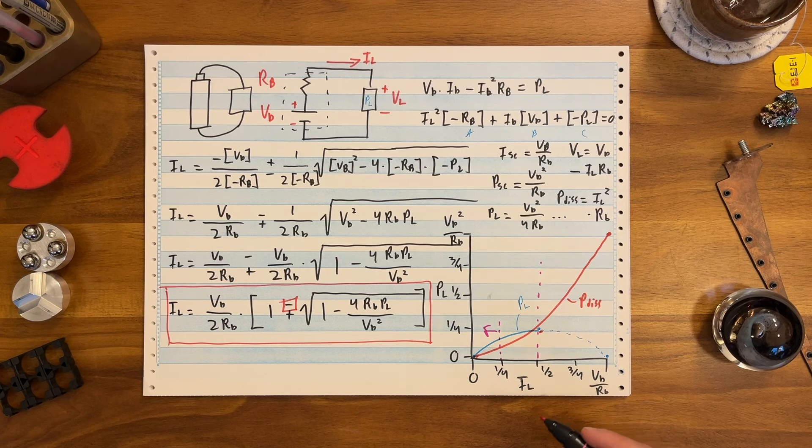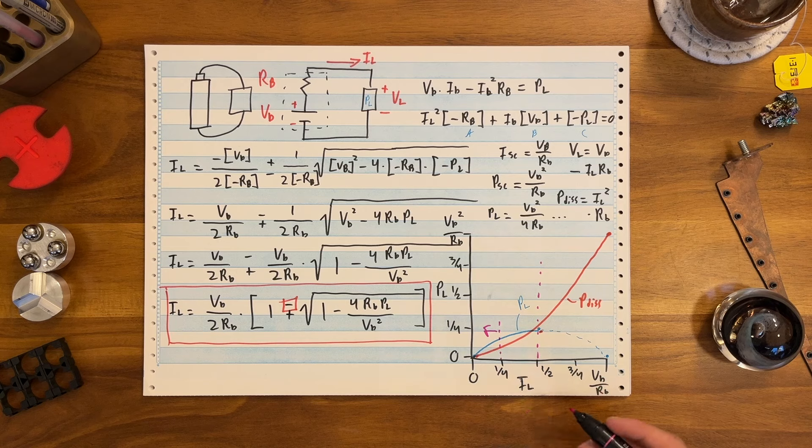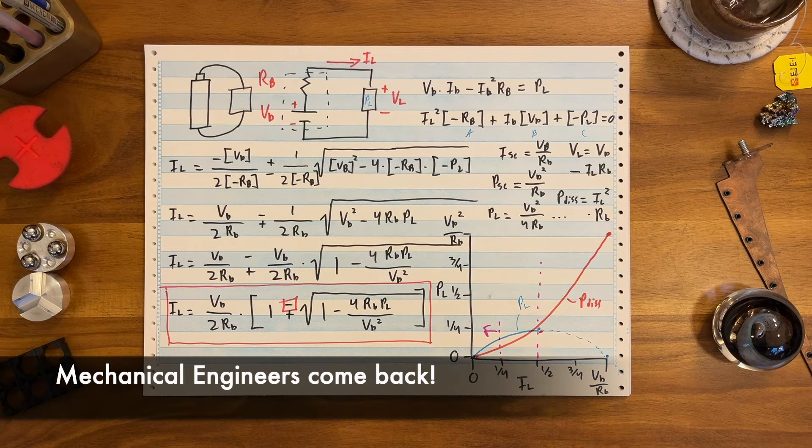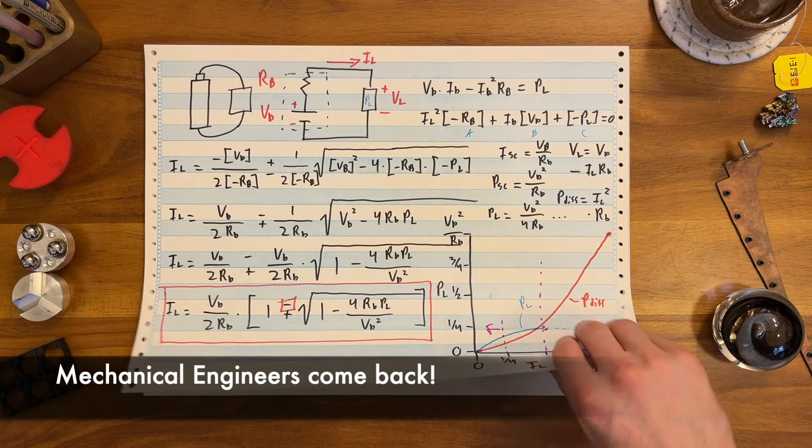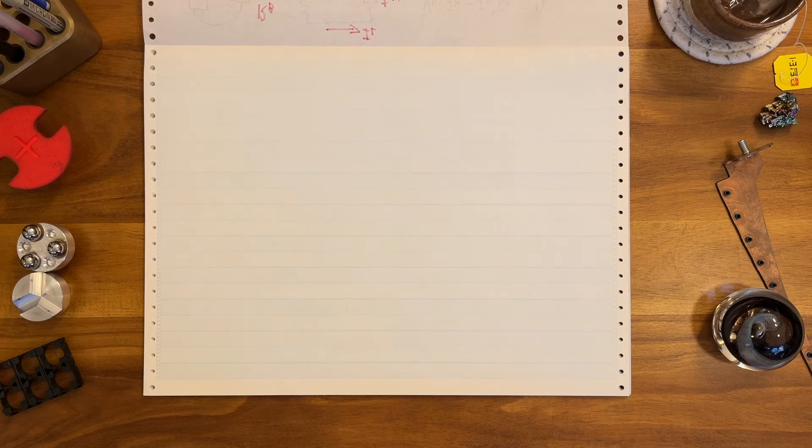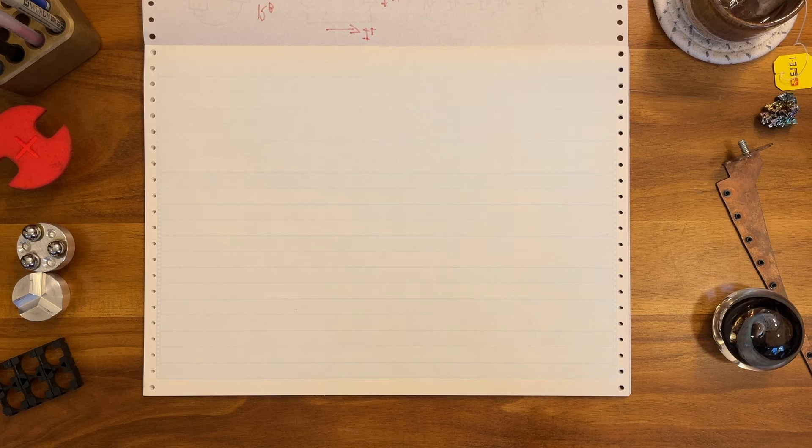The other interesting thing is if you remember like maximum power point, if you're drawing half of the short circuit current, you are developing the maximum power in the load, which is one quarter of short circuit power, but you're also developing an equal amount in the cell, which is like, you know, let's say you're doing 200 watts at the load, but also 200 watts thermally in the cell. That's a crazy load. Practically, we operate down here.